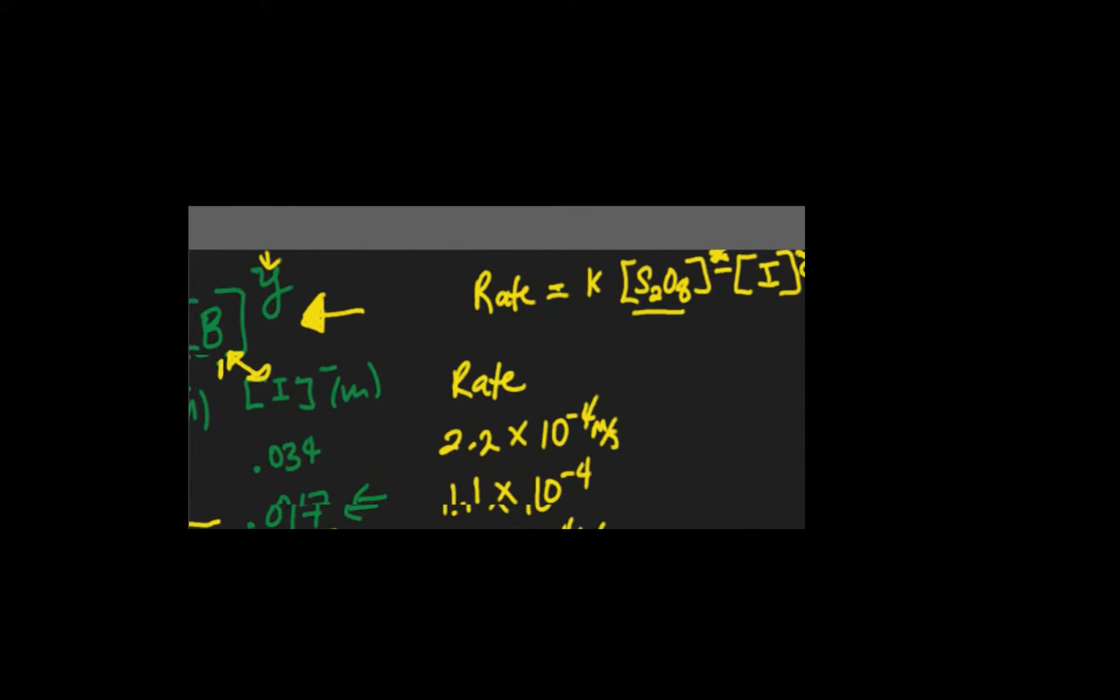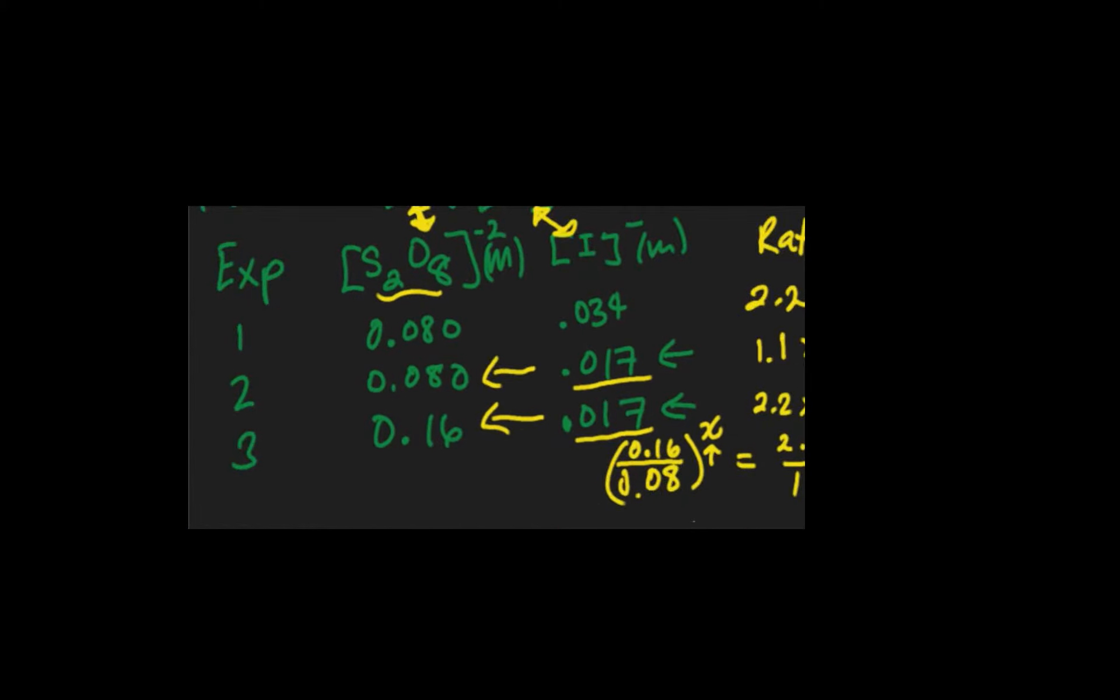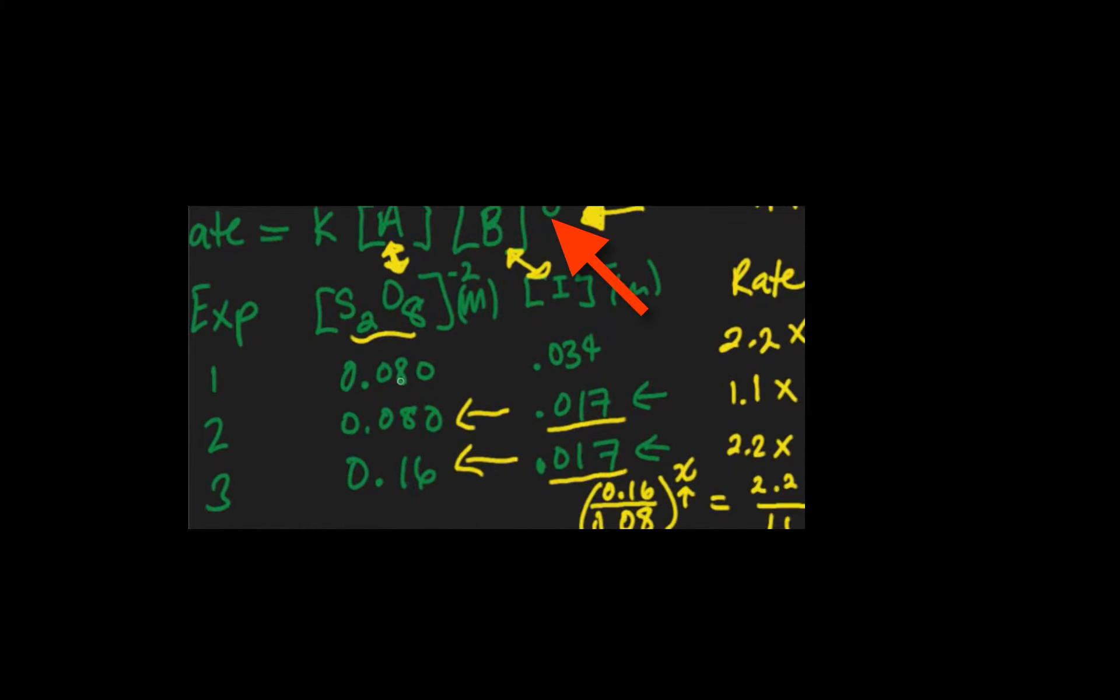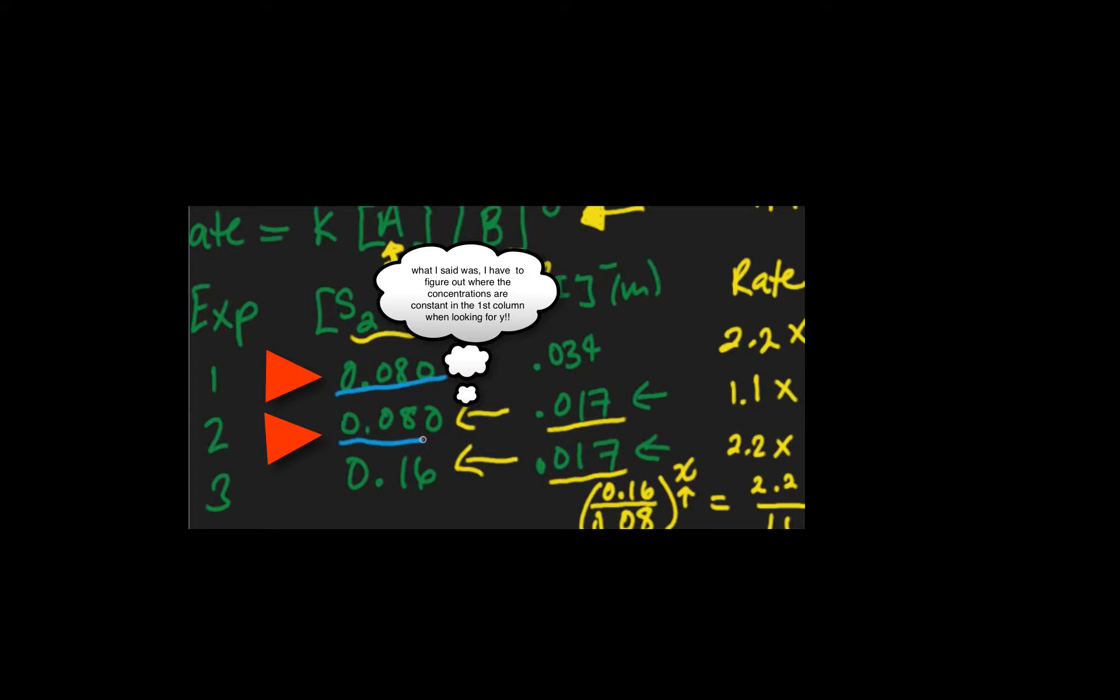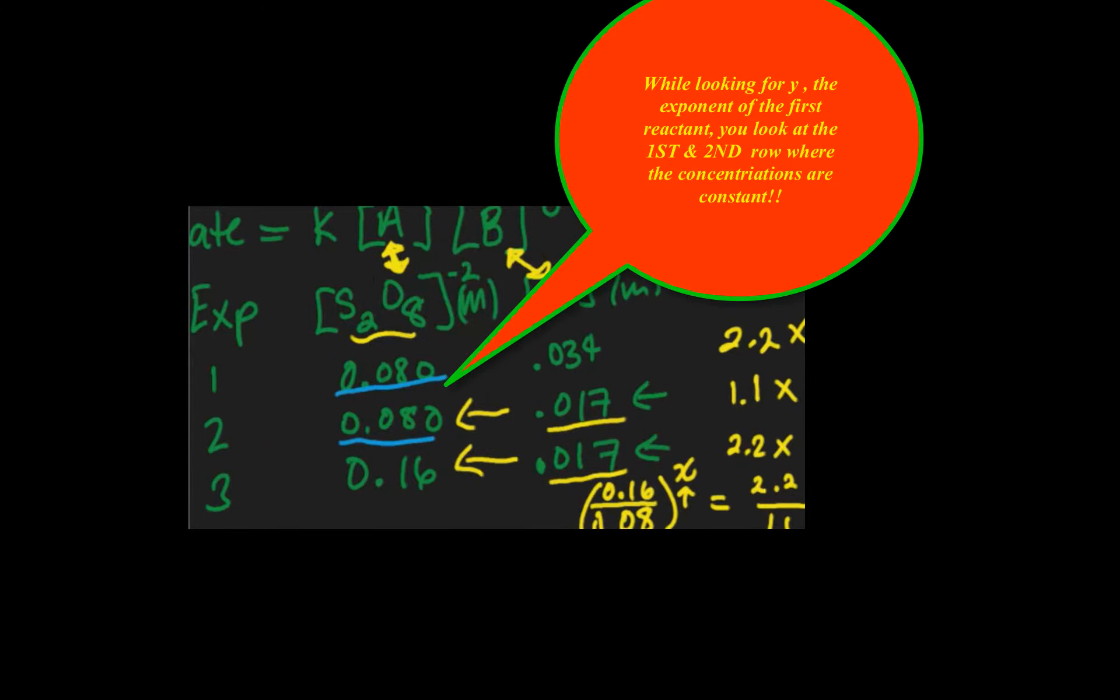Okay, so one more time, I'm looking for y. Y, if you remember, is the exponent of the second reactant iodide. So I have to look first to figure out where y is or what y is.